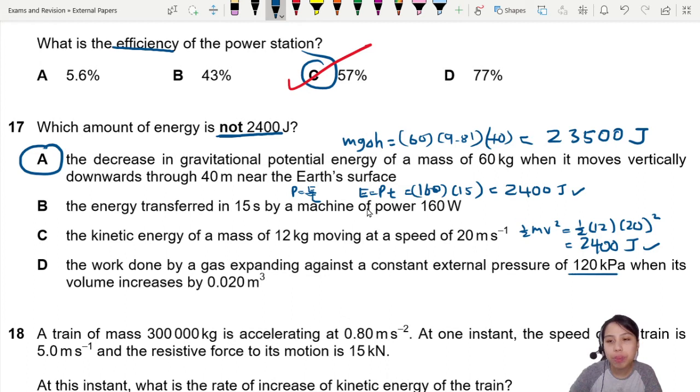Last one, work done by a gas expanding against constant pressure. Pressure P, increased volume. So this is work done against constant external pressure P times delta V.